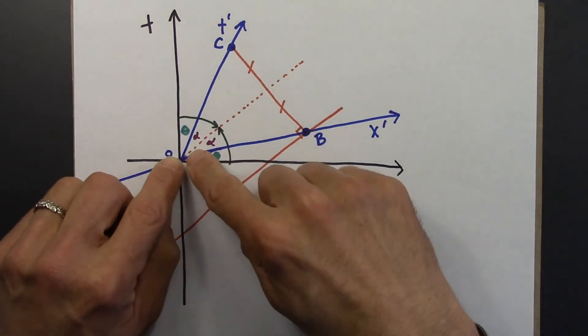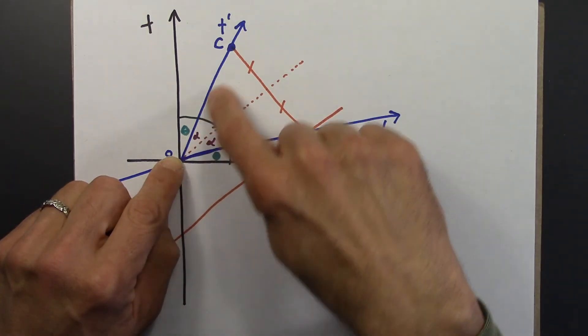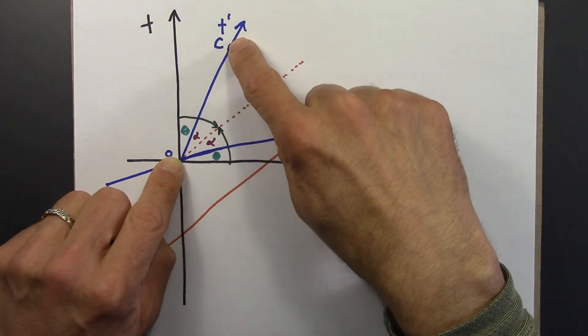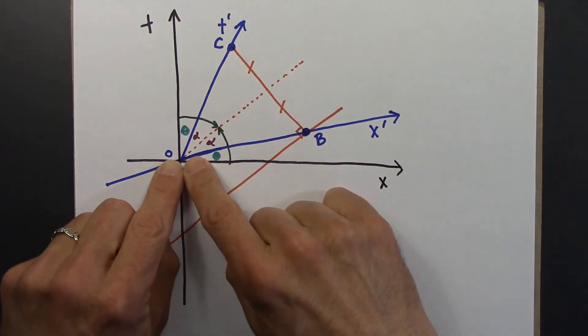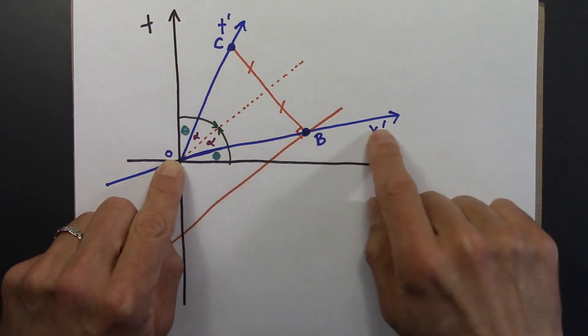So that tells me that this length and this length are the same. So what that means is, remember we used a factor of gamma to calibrate the t' axis. We're going to use the exact same factor of gamma to calibrate the x' axis.